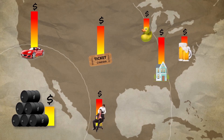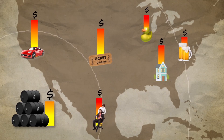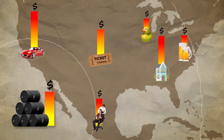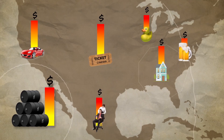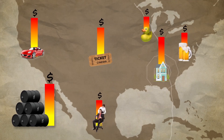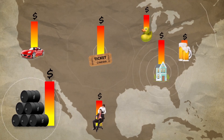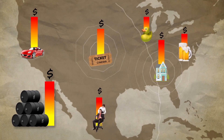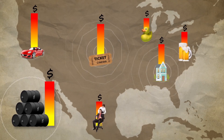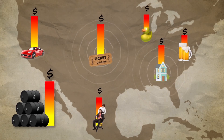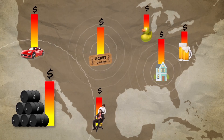Inflation — especially high and volatile inflation — adds noise to prices. So price signals become more difficult to interpret, and coordination is made less effective.